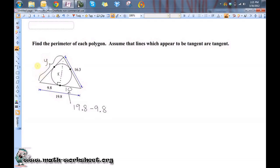And once I know all of these lengths here, then I can add them all up and get the perimeter, because the perimeter will be this 19.8, plus that 16.3, plus whatever that y is when we find out what y is.